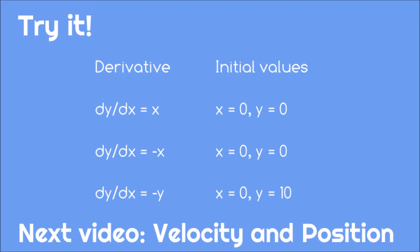You should now be able to use the Euler-Cromer method to find a function based on its first derivative. Follow the link in the description below to apply the Euler-Cromer method for the given derivative formulas and initial values. In the next video, we'll look at how we use the Euler-Cromer method in physics to relate an object's velocity to its position.